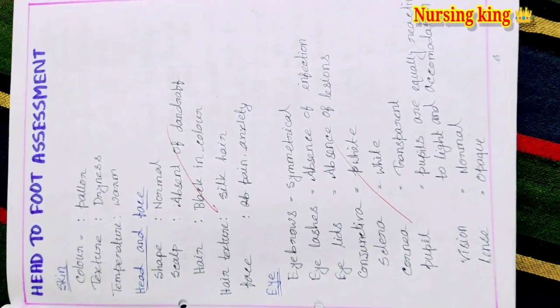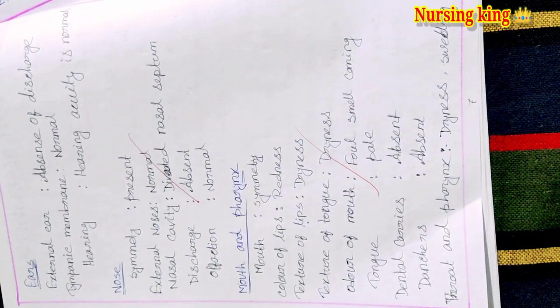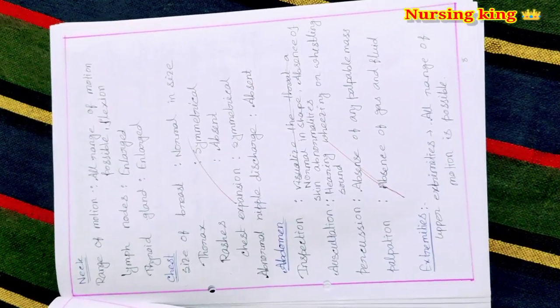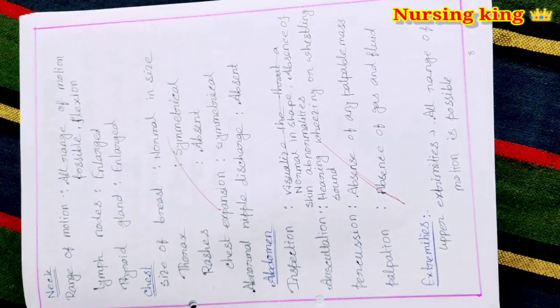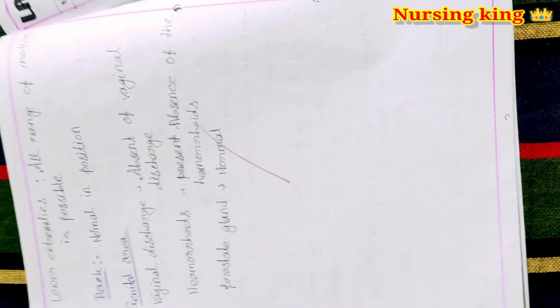In the head to toe examination, your eyes, nose, ear, head, mouth, pharynx, larynx, every position you have to write. Any abnormalities is there or not, you have to mention. What is the abnormalities is there in that physical examination. After physical examination, you have to write regarding the lab investigation.